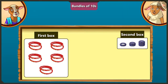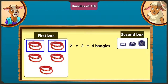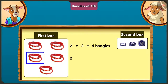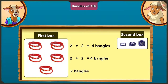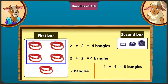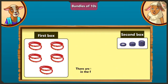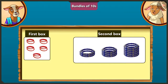Lily, we do not have to count the bangles one by one like this — I will teach you. There are 2 and 2, so 4 bangles in the first row. There are also 2 and 2, so 4 bangles in the second row. And there are 2 bangles in the third row. We get 8 by adding 4 plus 4, then 10 by adding 2 to 8. So there are 10 bangles in the first box.